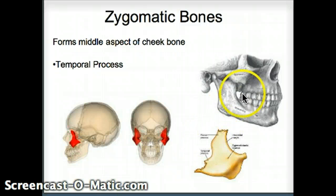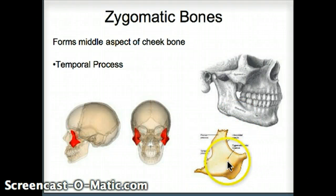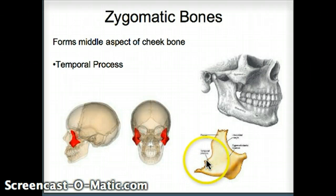The zygomatic bone is our cheekbone right here. We can take it out of the skull — there's one right here. There are multiple processes attached to it. The one I'm most concerned with this semester is the temporal process of the zygomatic bone, which will meet up with the zygomatic process of the temporal bone.